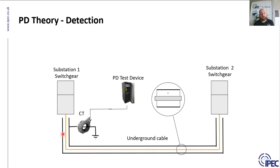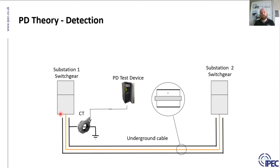On medium voltage networks, HFCTs are installed in the cable termination back in the substation, quite often on the earth sheath — particularly for spot testing — because the earth tends to be more accessible. Installing on the core gives a more accurate signal and slightly lower PD detection threshold, but that requires a shutdown. Core installation tends to suit permanent solutions, while temporary applications typically use the earth sheath.